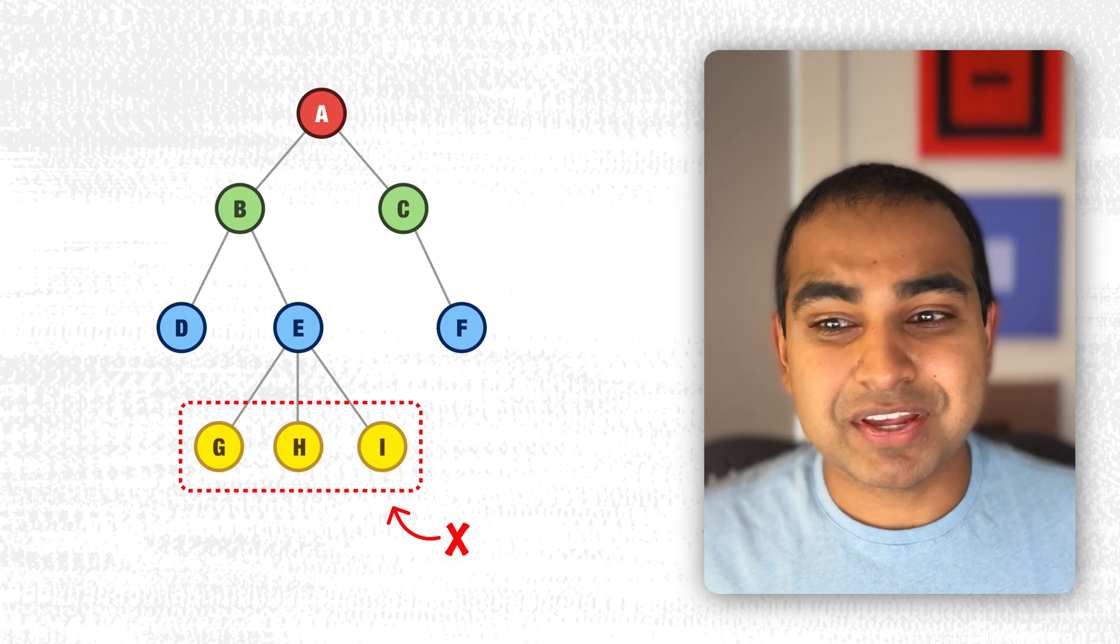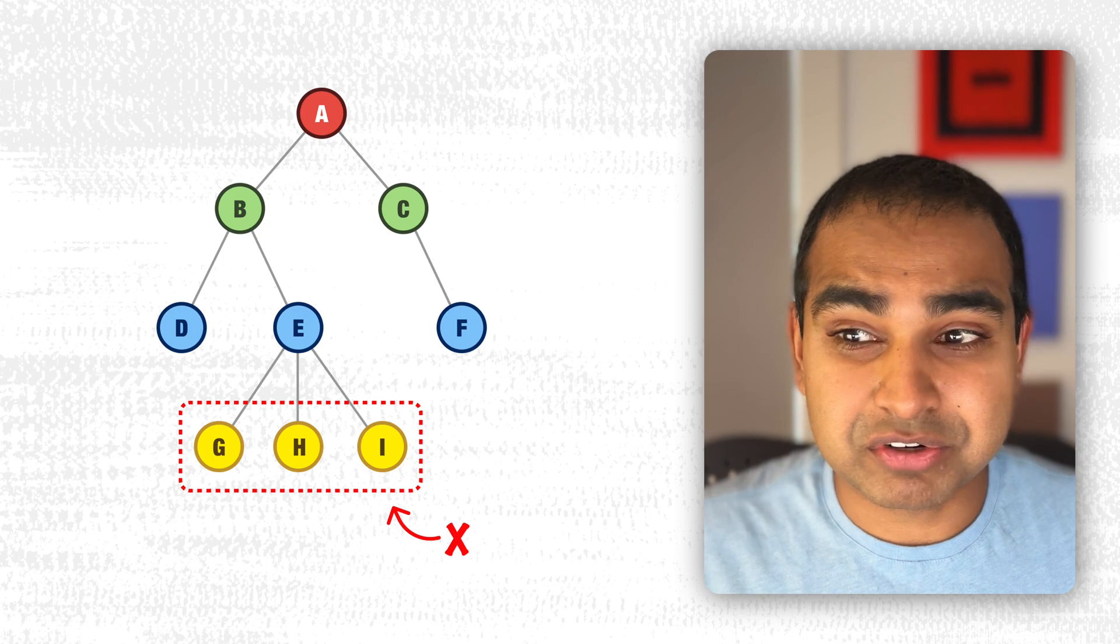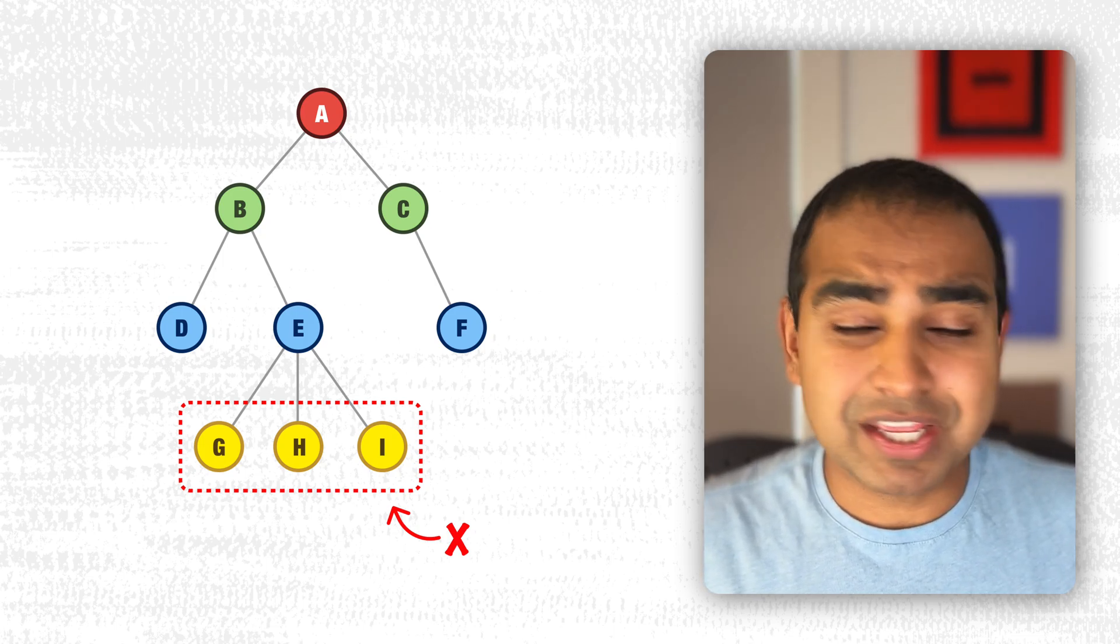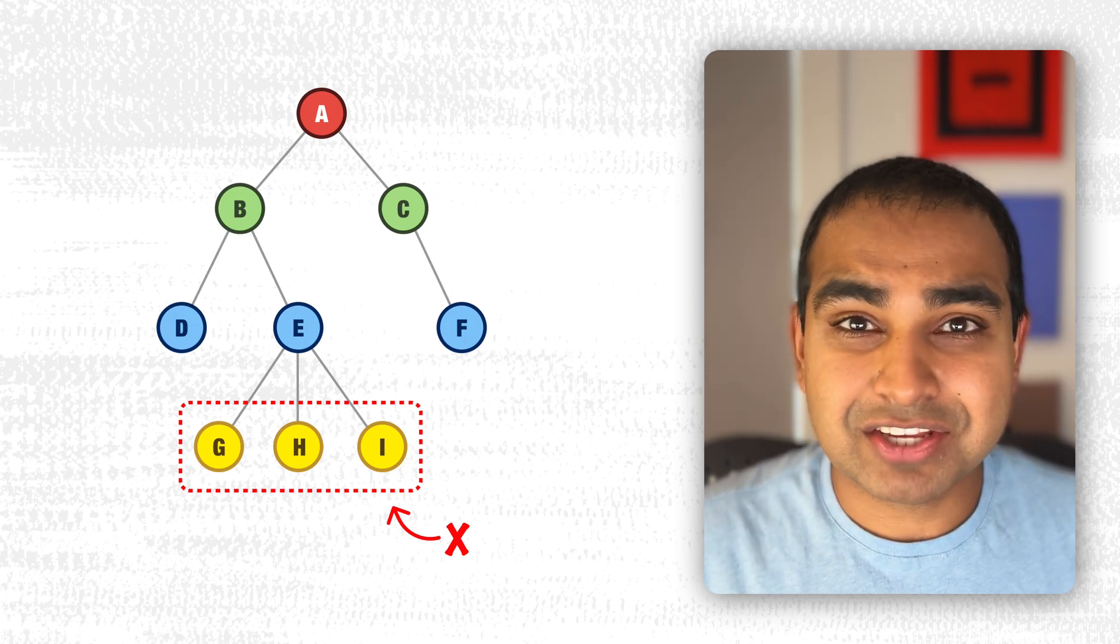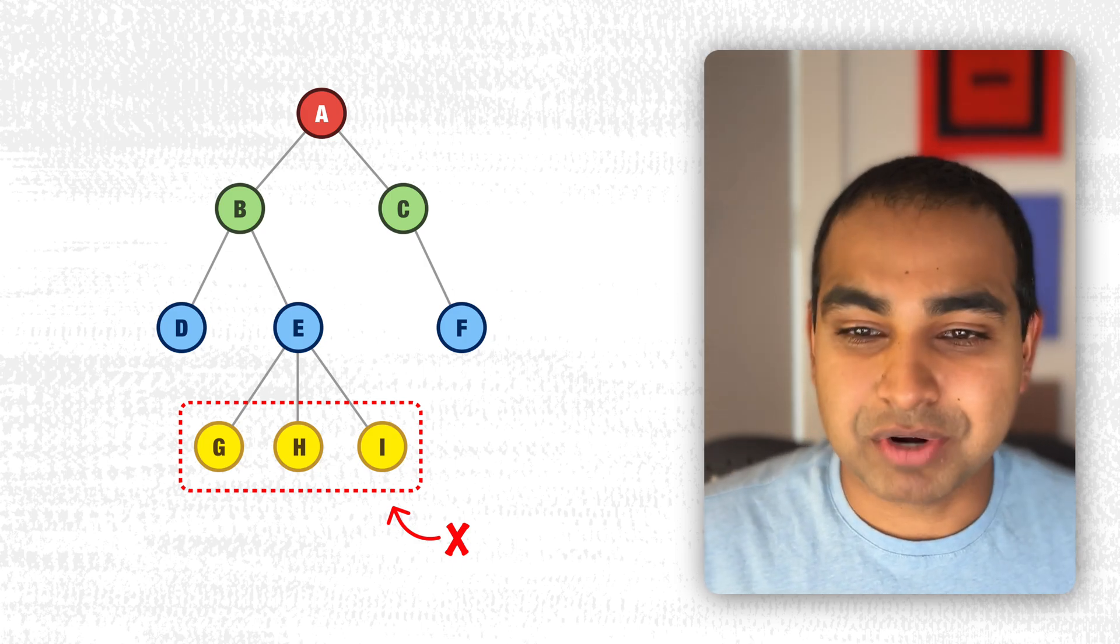So the first rule is that a binary tree can only have, at most, two children - either no children or at most two children, but nothing beyond that. In this case, you can see that the node E has three children: G, H, and I. So definitely a valid tree, but not a valid binary tree.